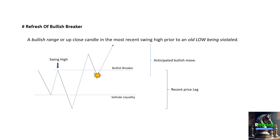Let's also refresh on the bullish breaker block. The difference between a bearish and a bullish breaker block is that a bearish breaker block forms when the market is downtrending, and a bullish breaker block forms when the market is uptrending.